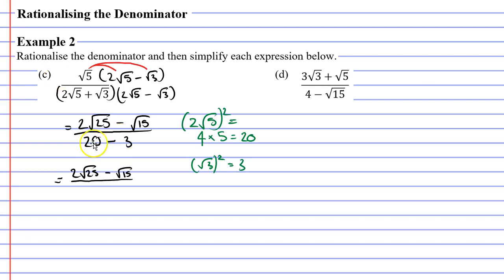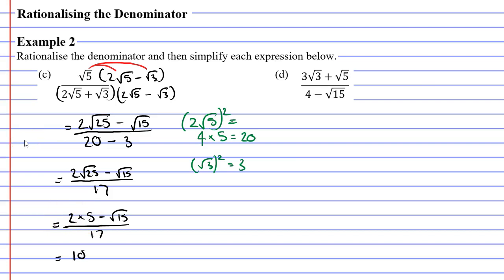Our numerator is 2 root 25 minus root 15, and 20 minus 3 is 17. Is there any simplifying we can do? Well, the square root of 25 is just 5. So we rewrite this as 2 times 5 minus root 15 over 17. And 2 times 5 is 10. So we get (10 minus root 15) over 17.